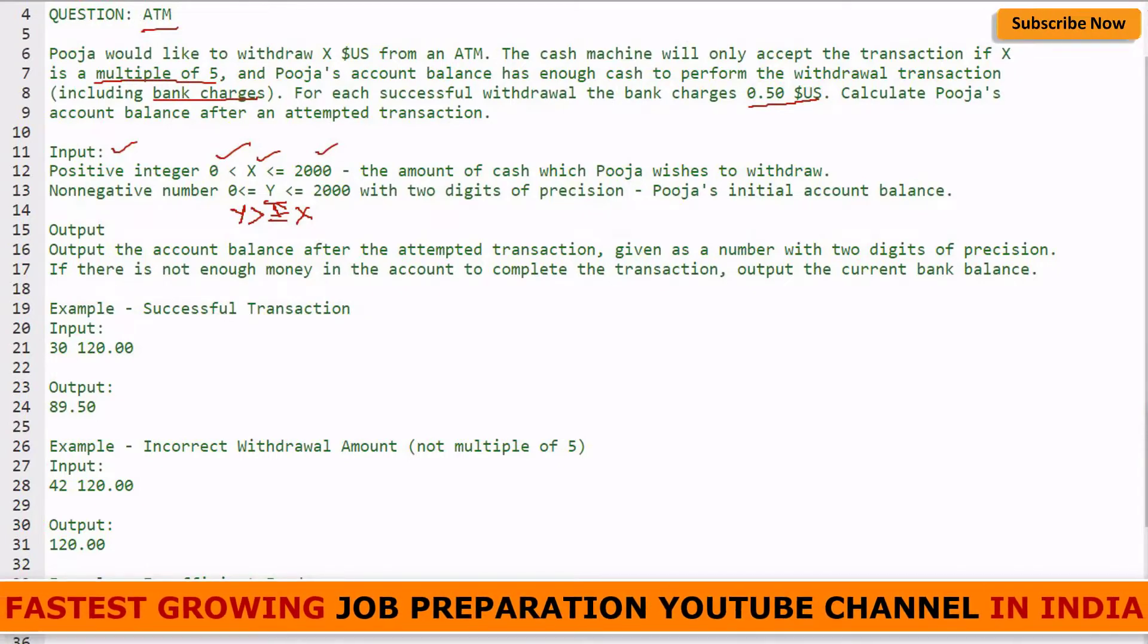The output should be the account balance after the attempted transaction, given as a number with two digits of precision. If there is not enough money in the account to complete the transaction, output the current bank balance.